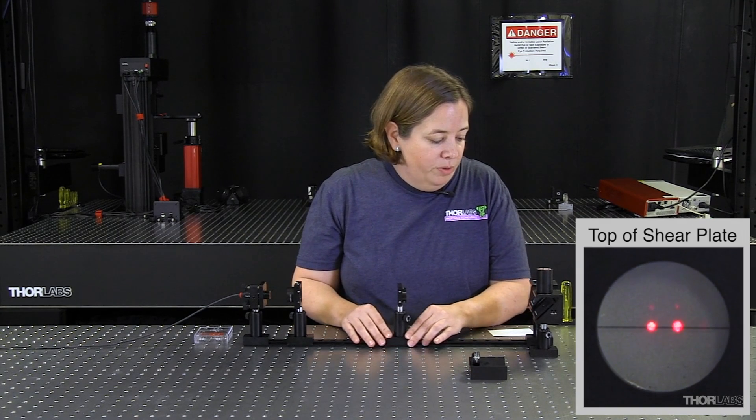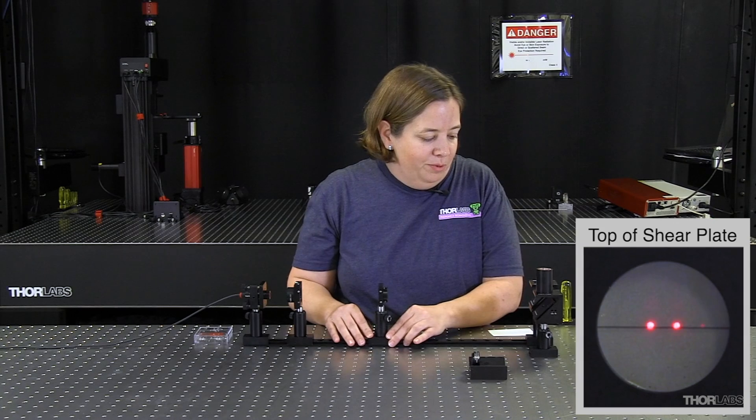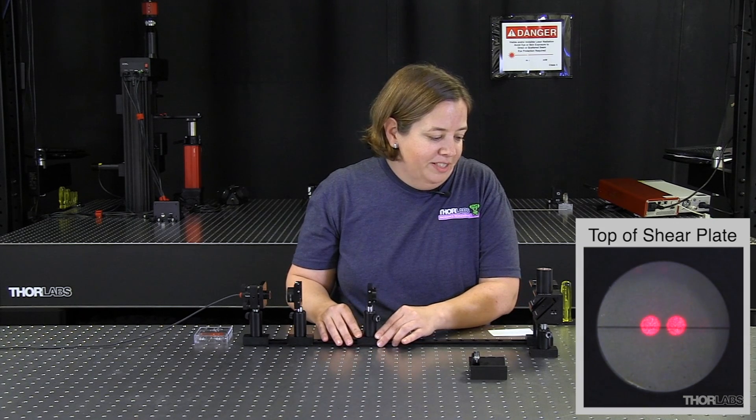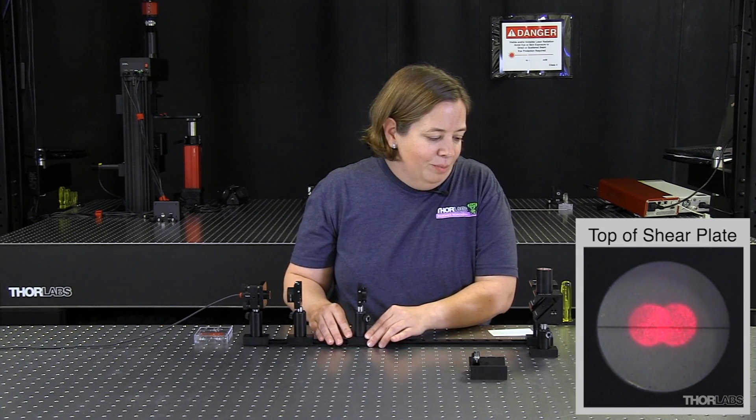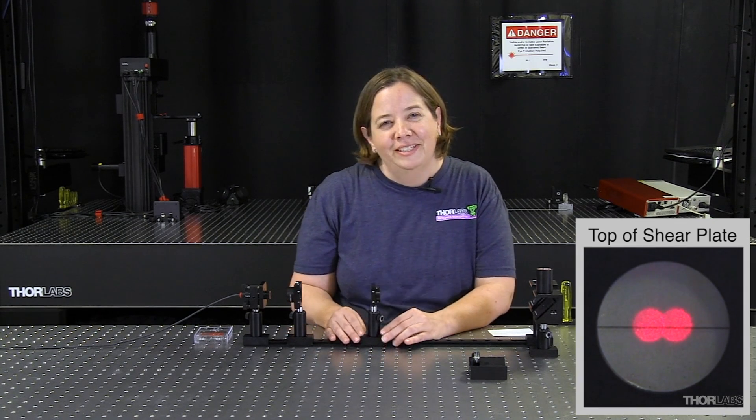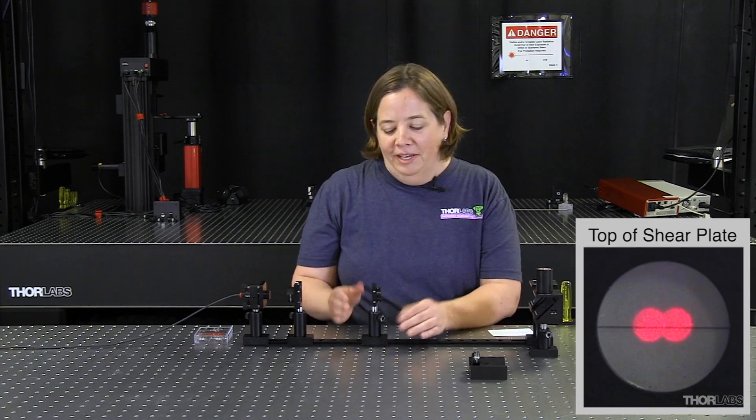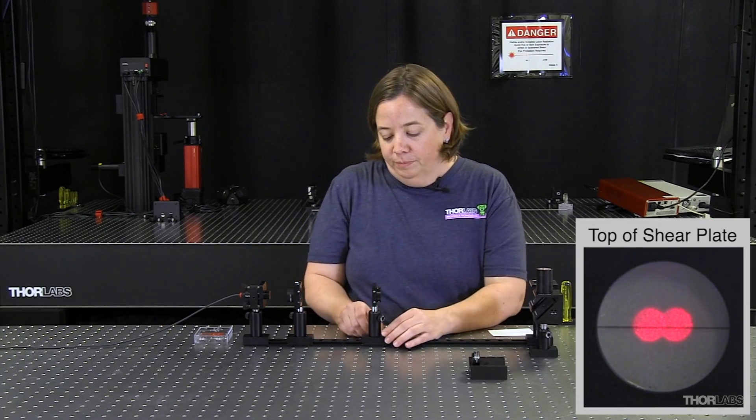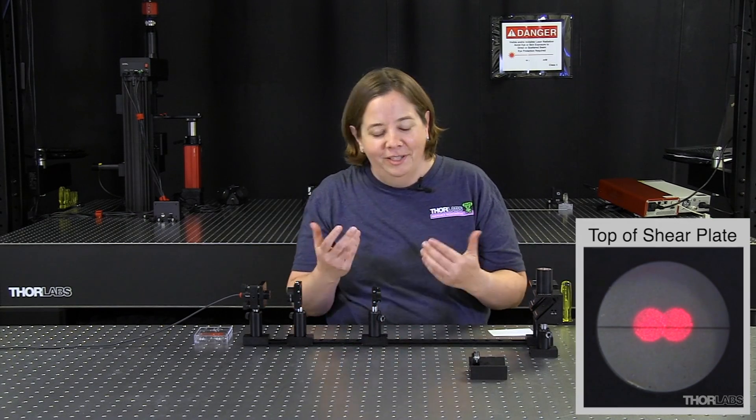I can move back closer to my focus. That should get me closer to collimation with my shorter focal length. As I go through, I see these beams stay pretty small. Eventually they overlap. I'm not seeing any fringes. So my point of collimation is probably not anywhere where these beams are overlapped. This is not unexpected. I should use a smaller shear plate.